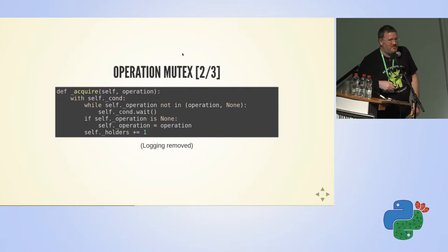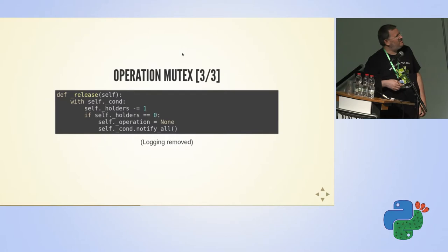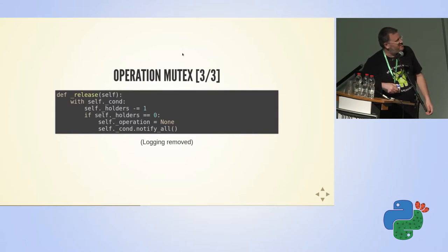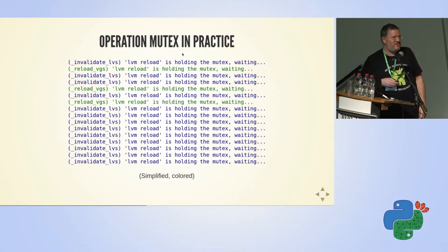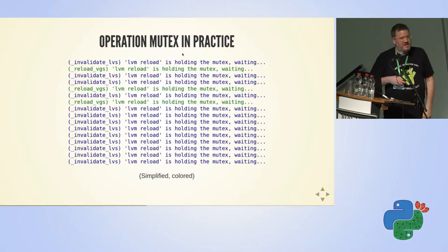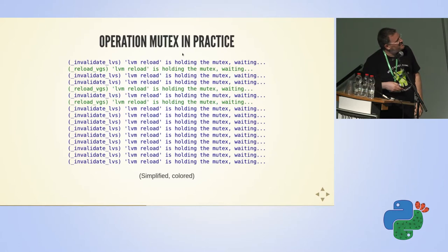We need the counter to release the lock. When we release the lock, we decrease the counter. If we are the last holder, we set the operation to none and notify the other threads waiting on the condition variable. This is a fragment from a VDSM log from a customer machine — simplified and with a lot removed to fit on the slide. We see here a lot of threads: some of them want to invalidate, some of them want to reload.